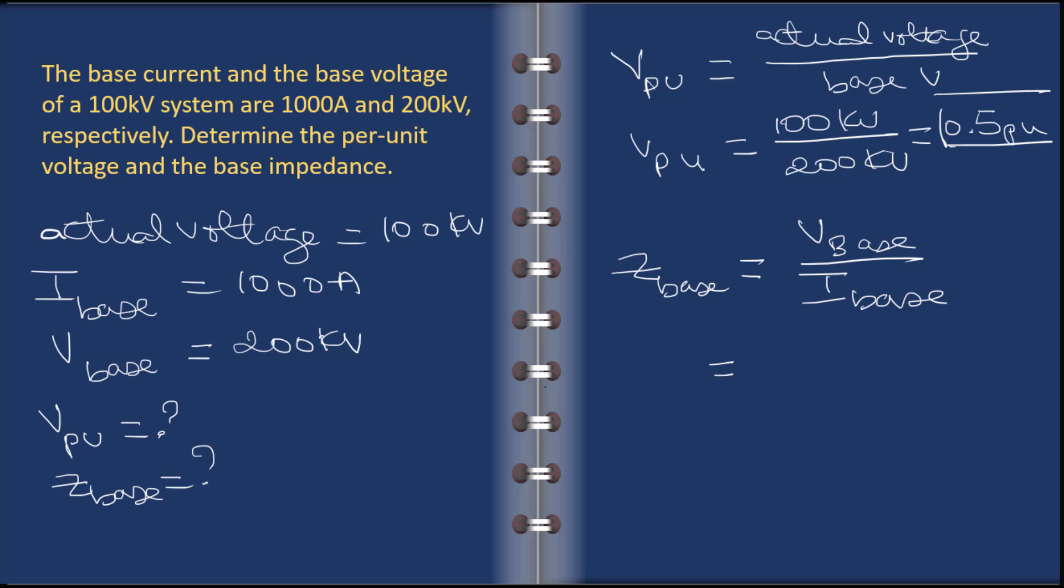Again, so V_base, what's V_base? Going back to the known parameters, V_base is 200 kV. And what's I_base? It's 1000 amp. So you can just do the math here.